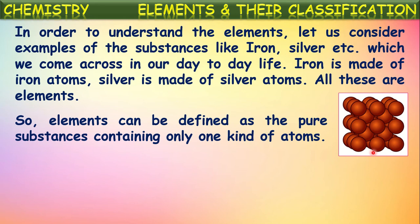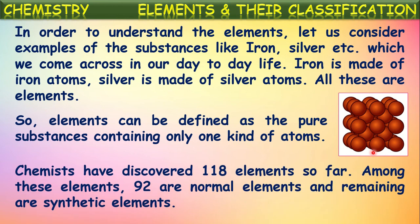An element is the substance containing only one kind of atoms. Chemists have discovered 118 elements so far. The modern periodic table contains all 118 elements. Out of these, 92 elements are naturally occurring elements and the remaining are synthetic elements — man-made elements prepared in the laboratory from already existing elements.